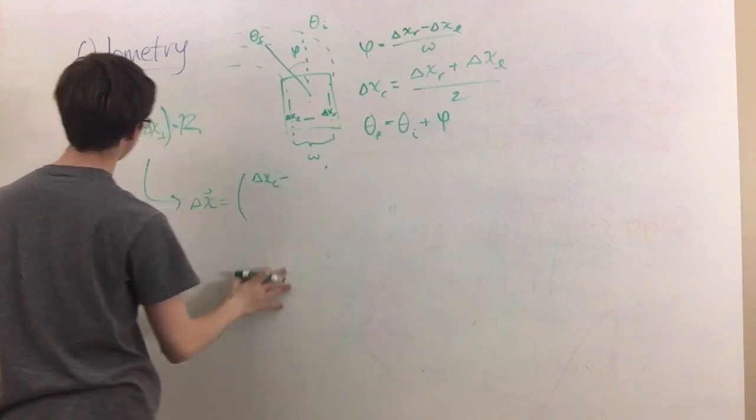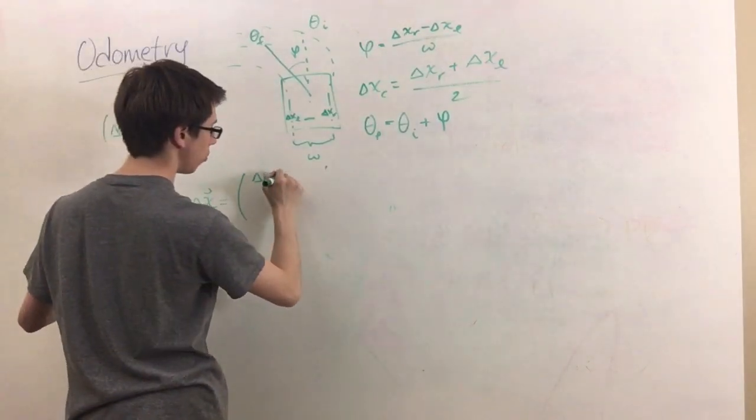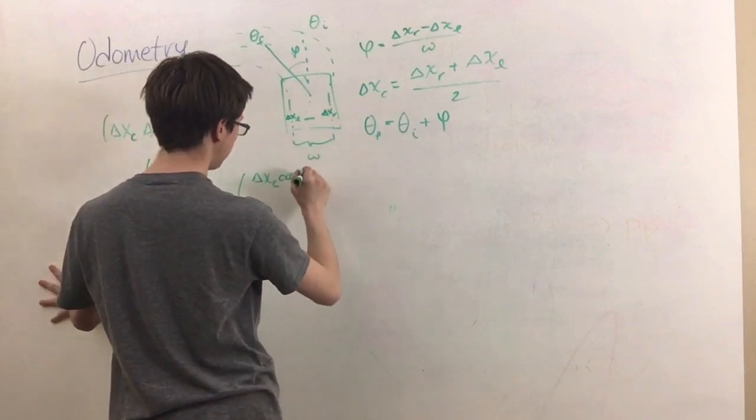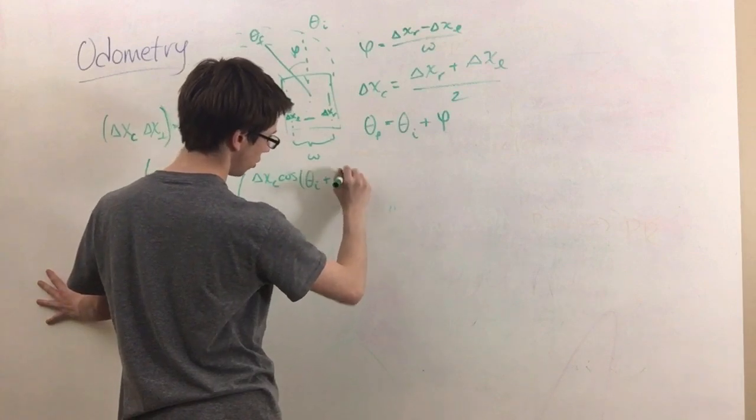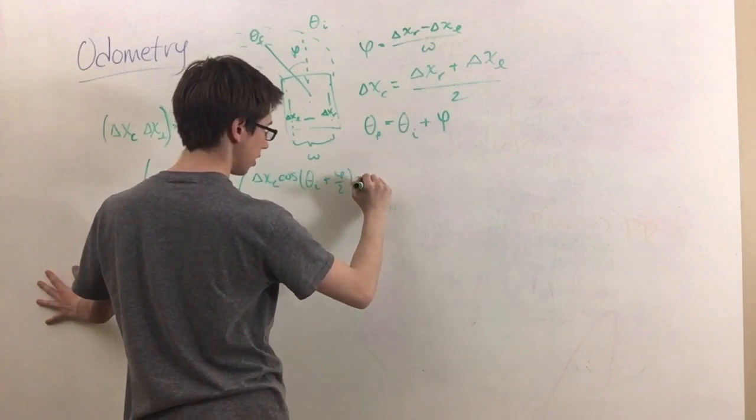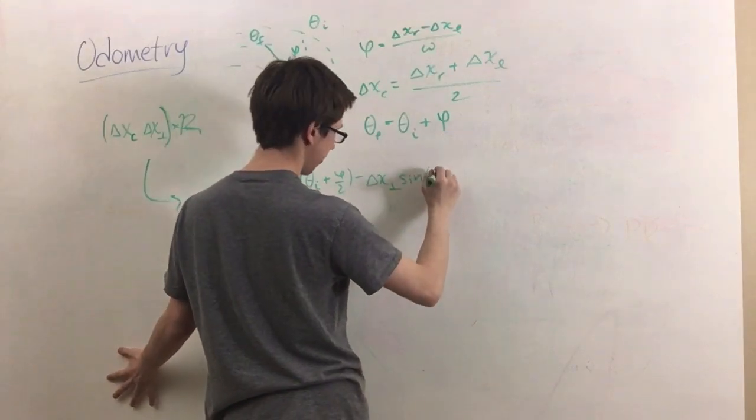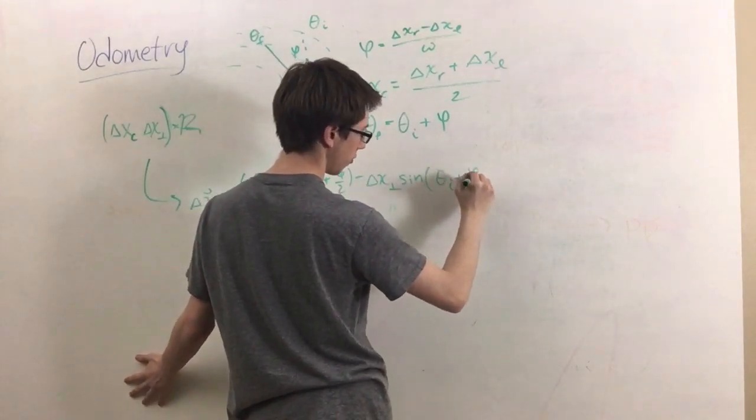Delta x c cosine of theta initial plus phi over 2 minus delta x perp sine of theta initial plus phi over 2.